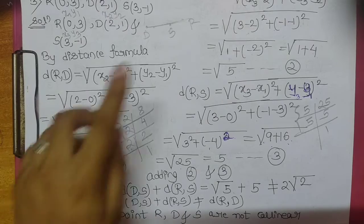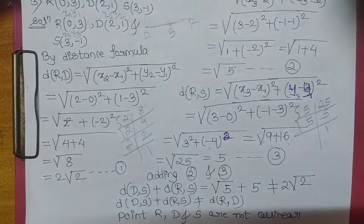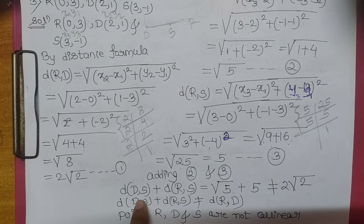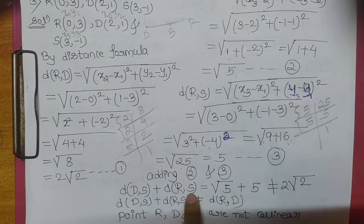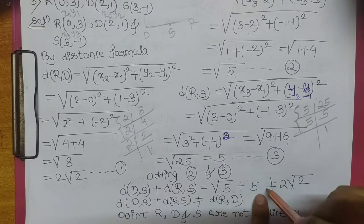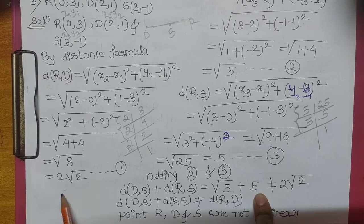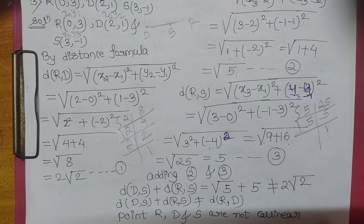Abhi hame add up karenge distance DS plus distance RS. DS aapka root 5, RS aapka 5. Root 5 plus 5 ye kabhi bhi 2 square root of 2 nahi ho sakta. Matlab ye 3 points aapke collinear nahi hai.